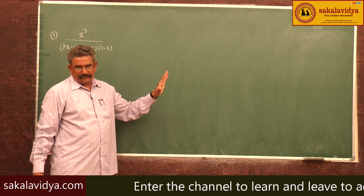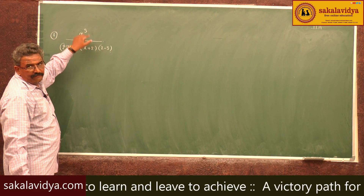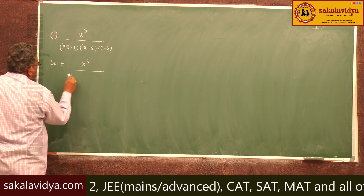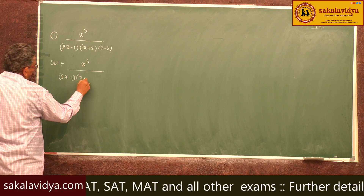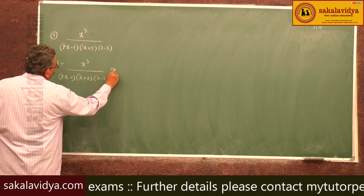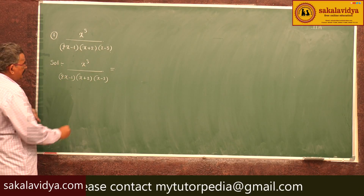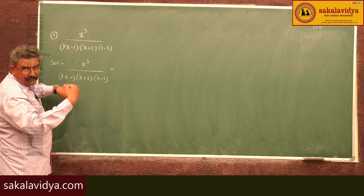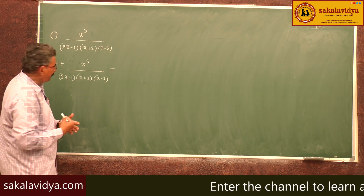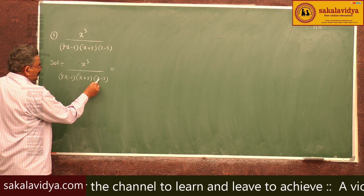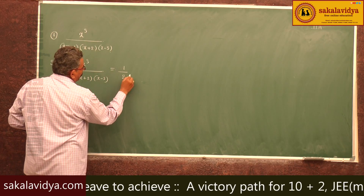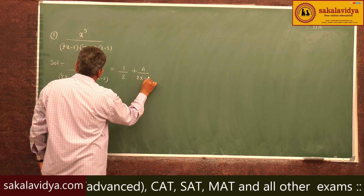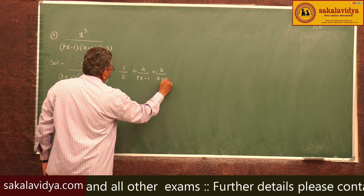In this problem the degree of the numerator is 3, and the degree of the denominator is also 3 — the degrees are equal. Whenever degrees are equal, we write: x³ divided by (2x-1)(x+2)(x-3) equals the leading coefficient ratio — x³ coefficient of numerator by x³ coefficient of denominator. The x³ coefficient of the denominator is 2, so we get 1/2, plus the partial fractions: A/(2x-1) + B/(x+2) + C/(x-3).